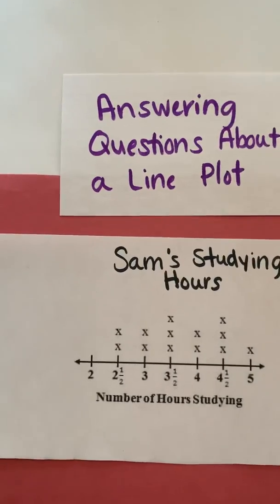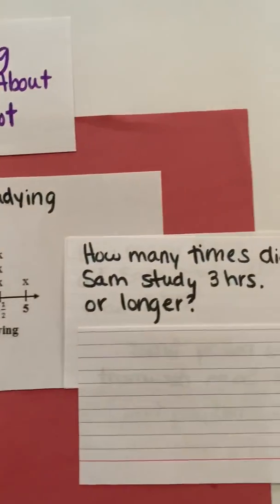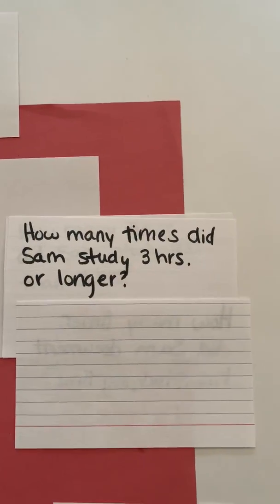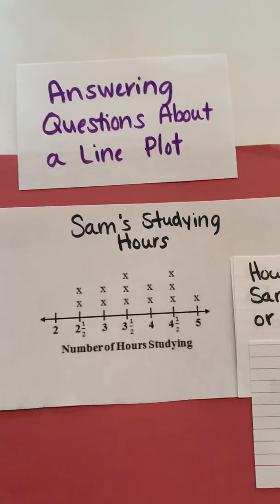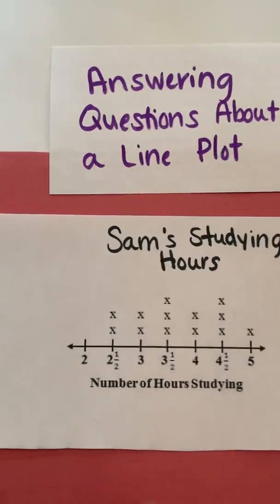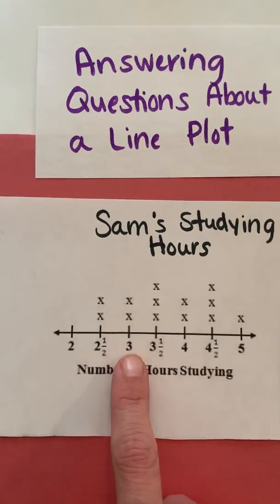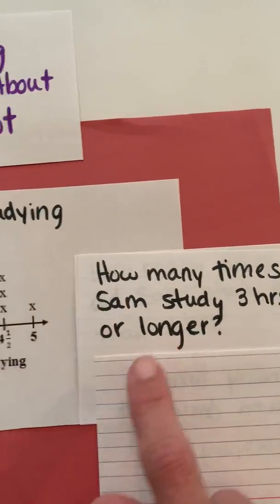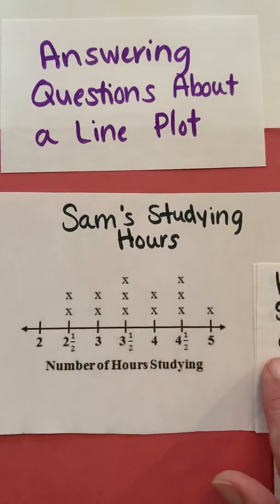Another question we're going to look at is: how many times did Sam study for three hours or longer? I'm going to find where three hours is on the line plot. Because it says three hours or longer, I am going to include the three and everything past the three.